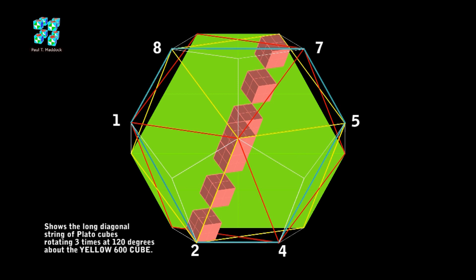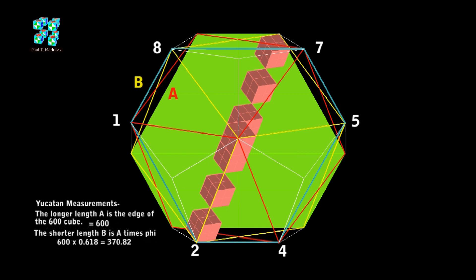Now I'd like to focus on the measurements of the Yucatan. The longer lengths are the length of the edge of a cube, and the shorter lengths are exactly golden ratio to the edge of a cube. So you can see that phi is very important in Platonic geometry.